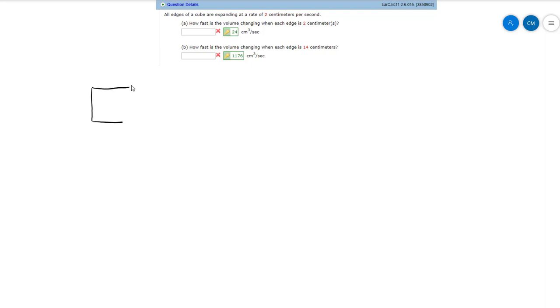for example, if this is the cube and we say that this is side length x, then we can say that dx/dt, the rate of change of the side of that cube, is equal to 2 centimeters per second.